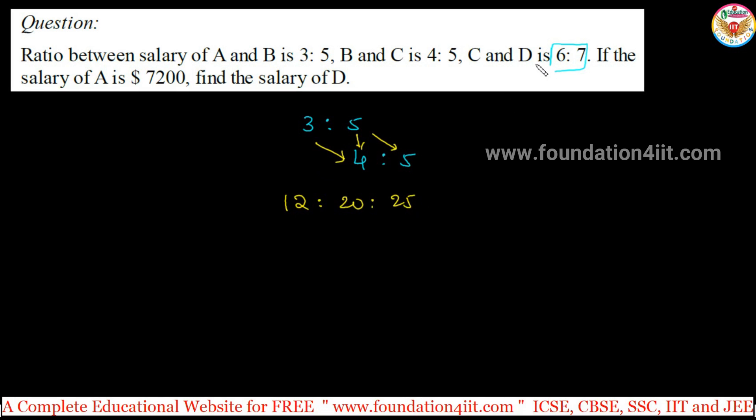Immediately what we should take, C:D is 6:7. So 6:7 you write, then with the 12 into 6, 20 into 6, 25 into 6.